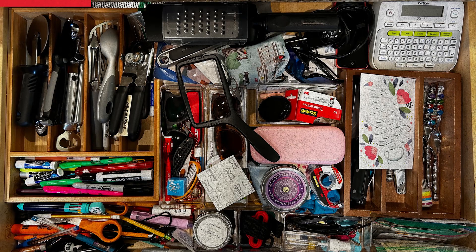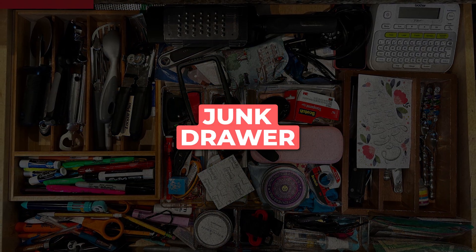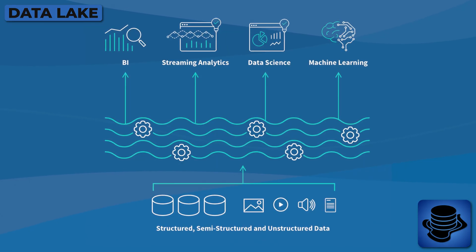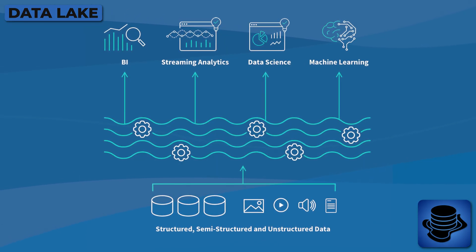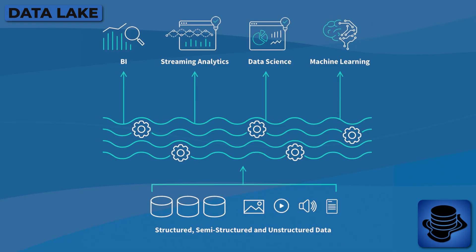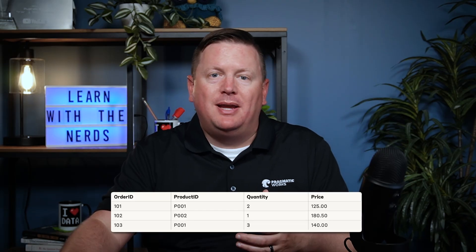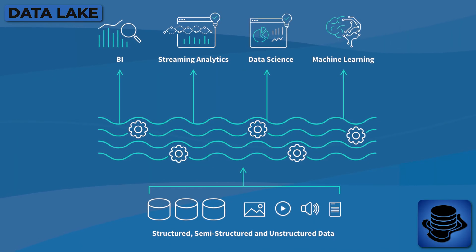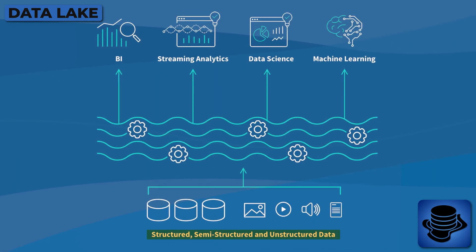Now let's talk about data lakes. This is one element of data storage that has many confused. Imagine you have a junk drawer — everybody's got a junk drawer in their kitchen — and that's where you just toss all your things, like old receipts, keys, pens, random gadgets. A data lake is kind of similar to that. It is a centralized storage repository for data collected from various sources, preserving it in its original or raw format. Whereas a database stores things in a structured format and a data warehouse is even more structured, data lakes handle a diverse range of data formats.